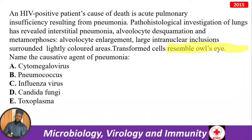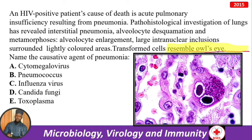Revisiting the HIV-positive patient question: the cause of death is acute pulmonary insufficiency from pneumonia. Pathohistological investigation reveals interstitial pneumonia, alveolocyte desquamation, and metamorphosis — the enlarged alveolocyte has large intranuclear inclusions surrounded by lightly colored areas. The transformed cells resemble an owl's eye. The causative agent is cytomegalovirus. Make sure you watch the CMV video in the playlist.